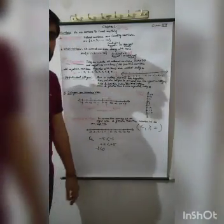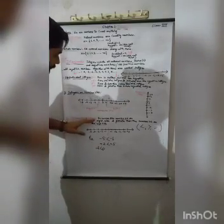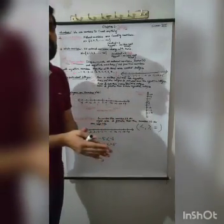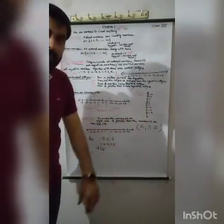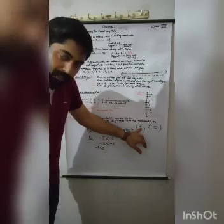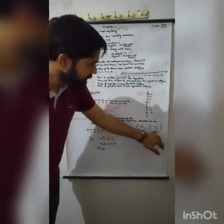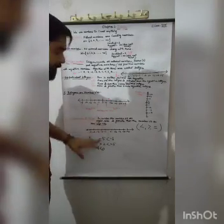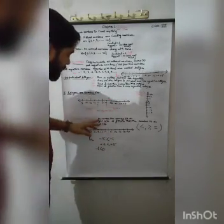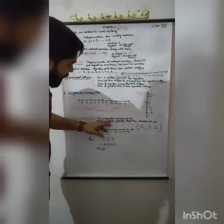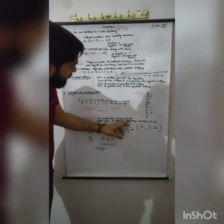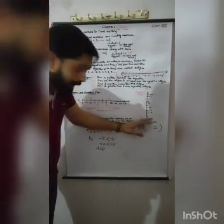Next and last point for today: comparison of integers. How do we compare? We compare using three signs: the less-than sign, the greater-than sign, and the equal sign. The important rule is: when comparing two integers on the number line, the number lying on the right-hand side is greater than the number lying on the left-hand side.